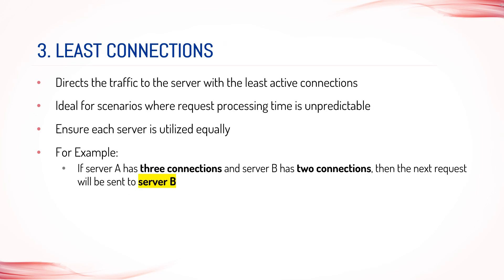3. Least Connections. The Least Connections algorithm directs traffic to the server with the least active connections, making it ideal for scenarios where request processing time is unpredictable. It ensures that each server is utilized equally as new requests are routed to the server with the fewest connections at that moment. For example, if server A has three connections and server B has two connections, then the next request will be sent to server B.